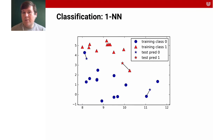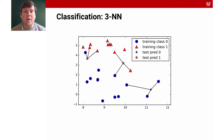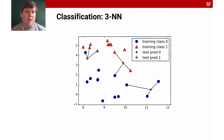With k=3, the prediction changes — especially for the data point near y=4 and x=8, which changed from being classified as benign to malignant. For the other point near x=10 and y=3, we also take a benign data point into account. We did not consider two nearest neighbors because we can't do a majority vote with an even number — we want an odd number to be able to do a majority vote.